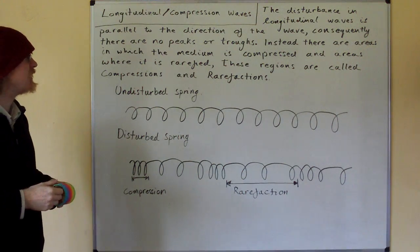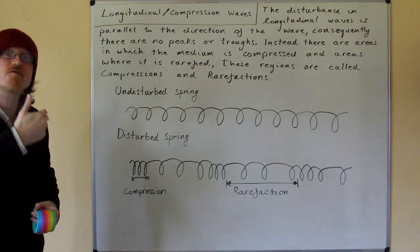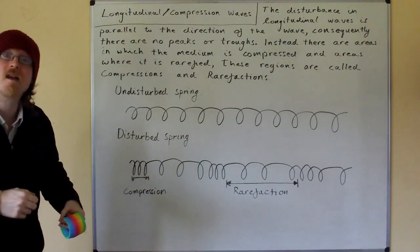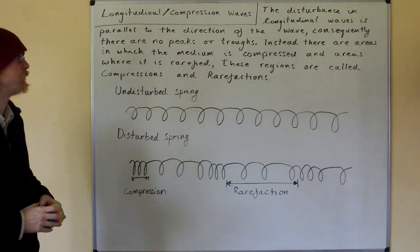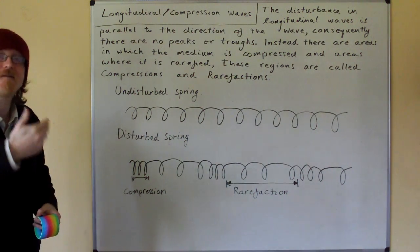Instead there are areas in which the medium is compressed and areas where it is rarefied. Where it is compressed it is more dense. To be rarefied means to be less dense. These regions are called compressions and rarefactions.